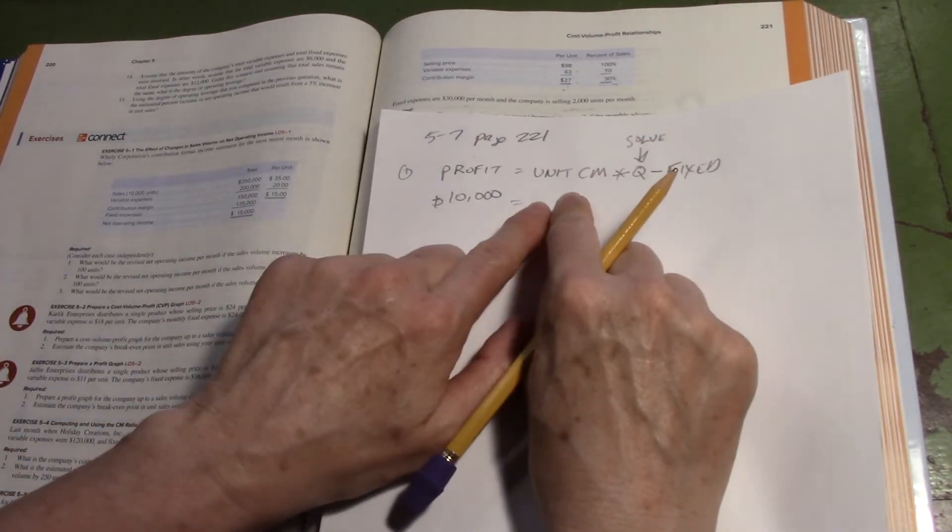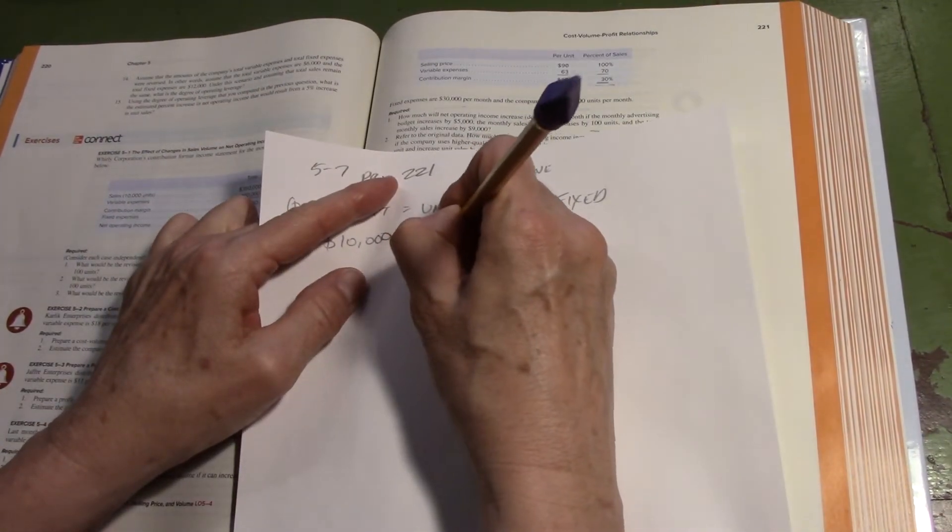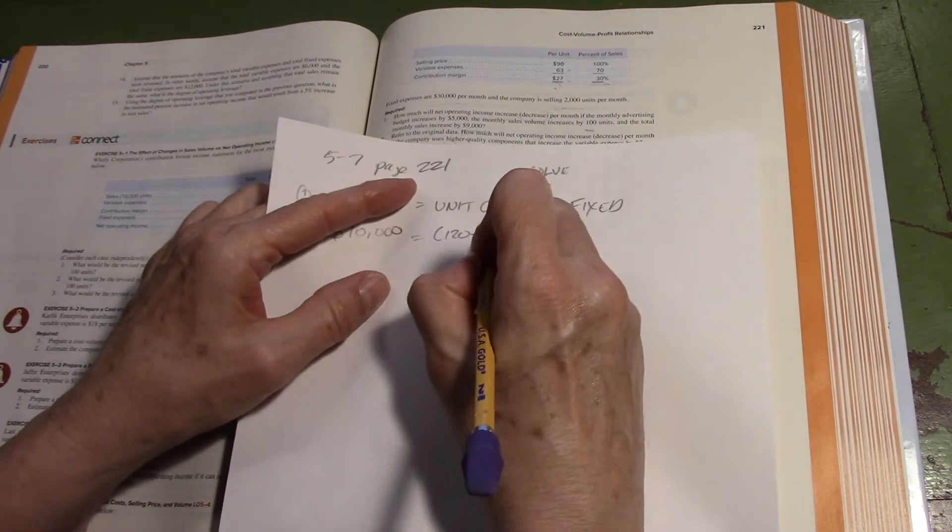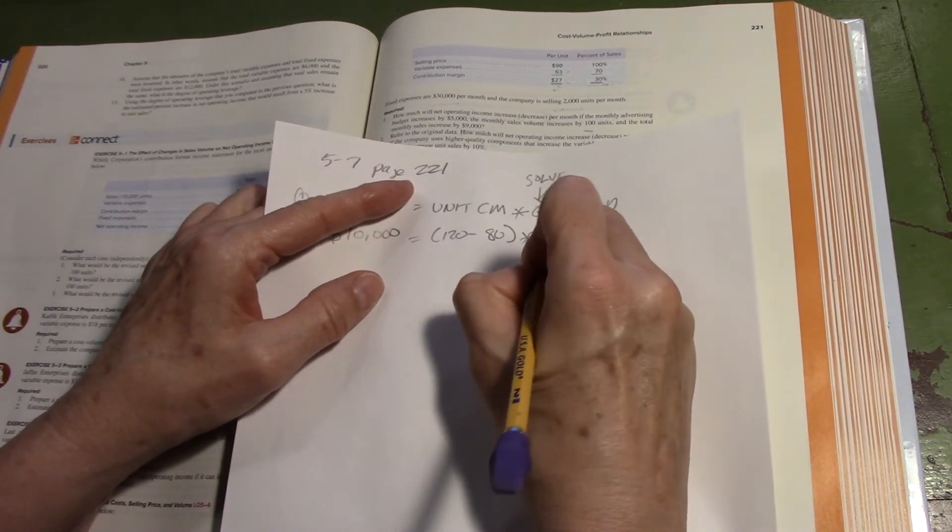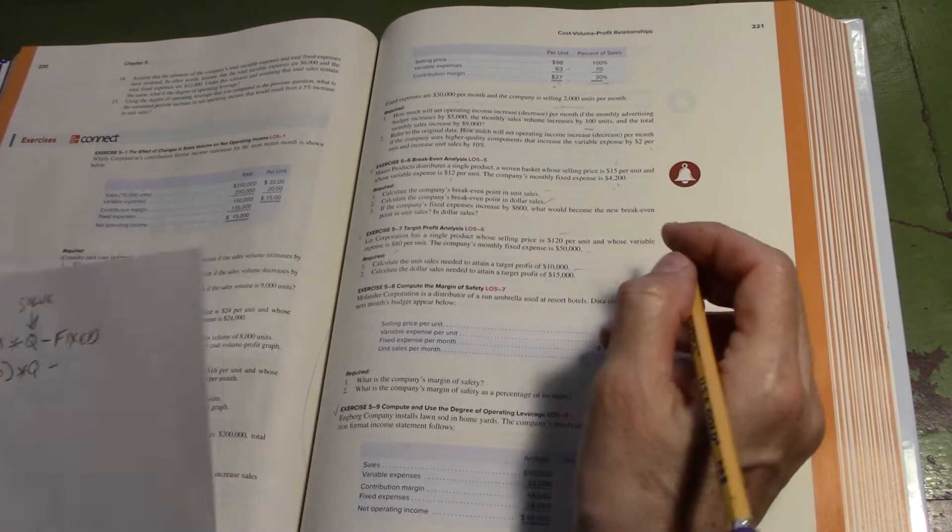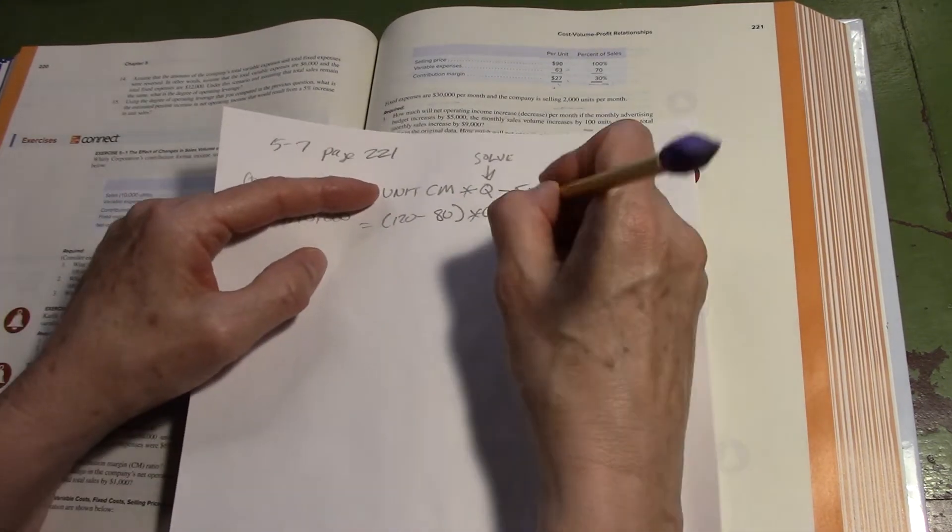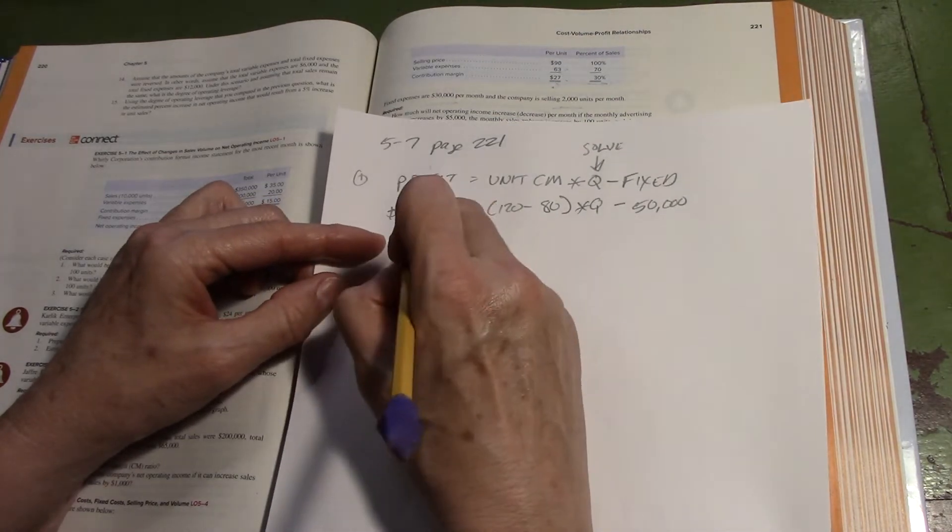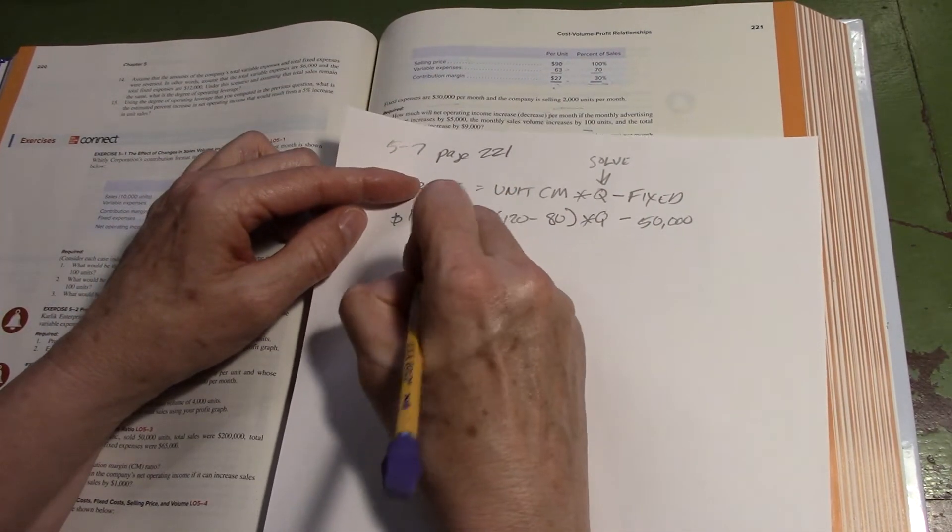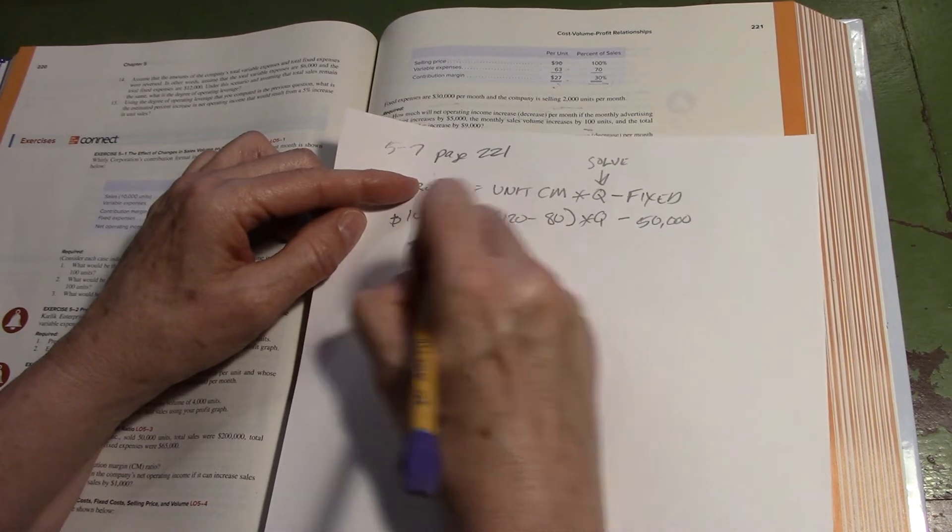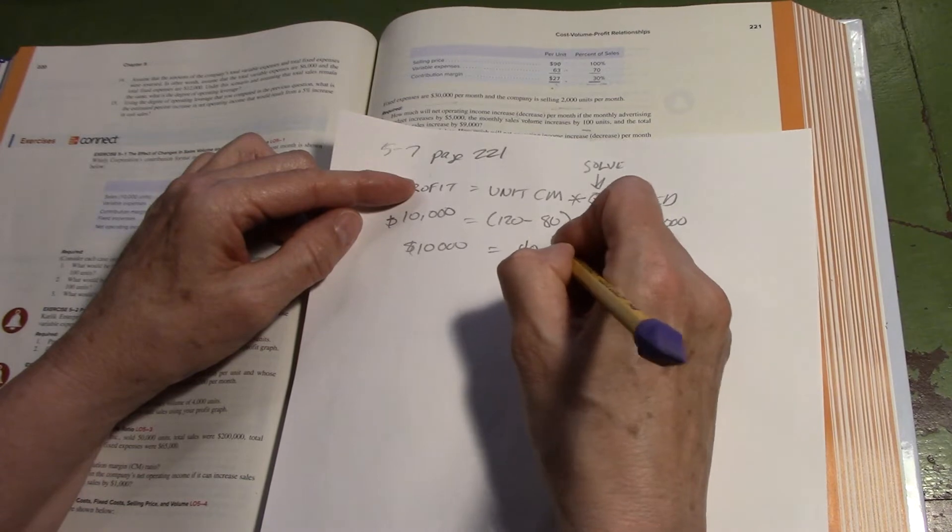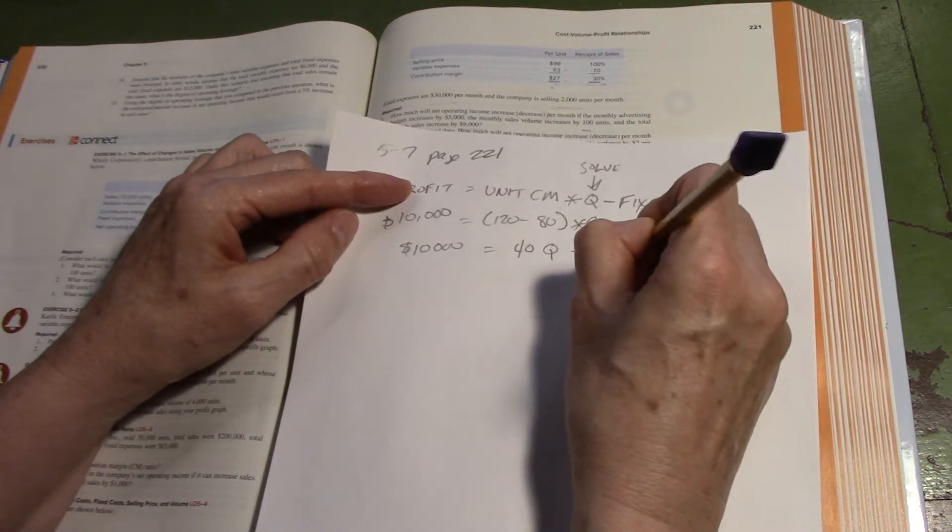That's equal to our unit contribution. I need my sales price, 120, and my variable, 80, times Q, minus 50,000. I'm going ahead and reducing it down. 10,000 equals, let's see, that's 40Q.